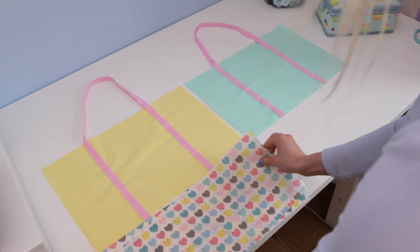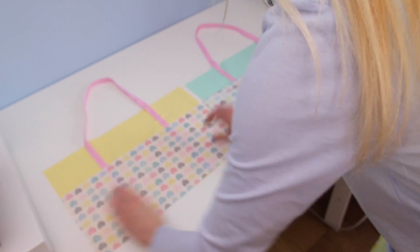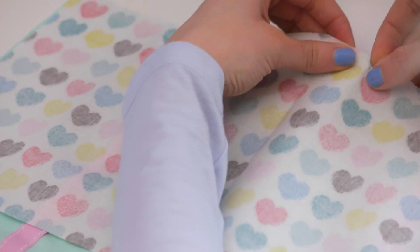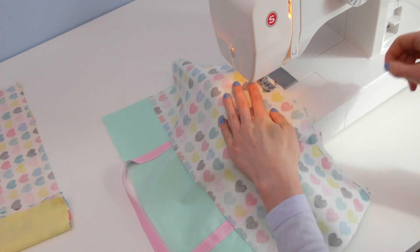Once these are done, line up the base fabric to each piece, flip them on top of the fabric, and line it up with the fabric's bottom edge. Pin these together, and then sew them using the sewing machine.